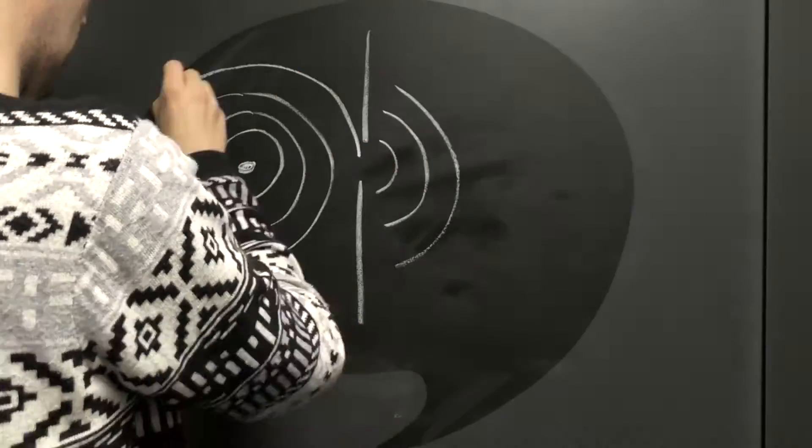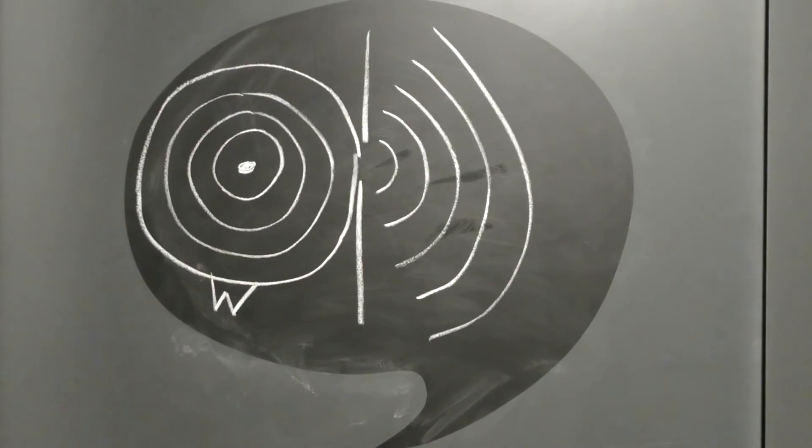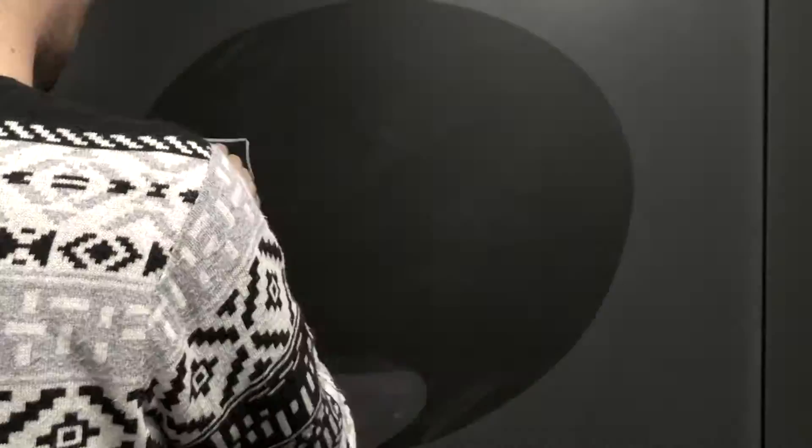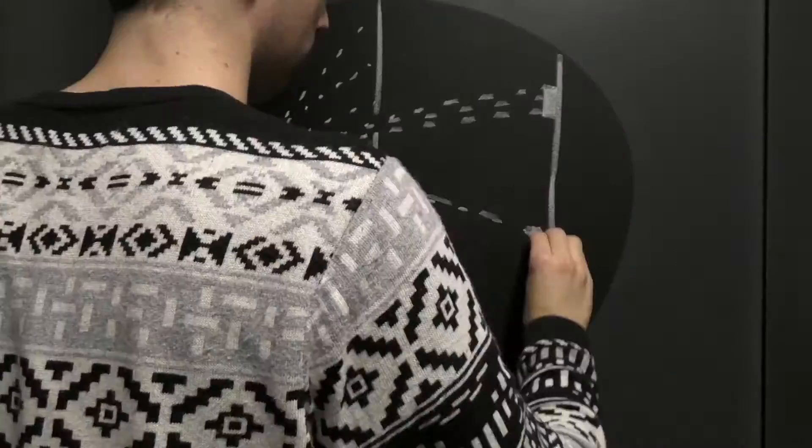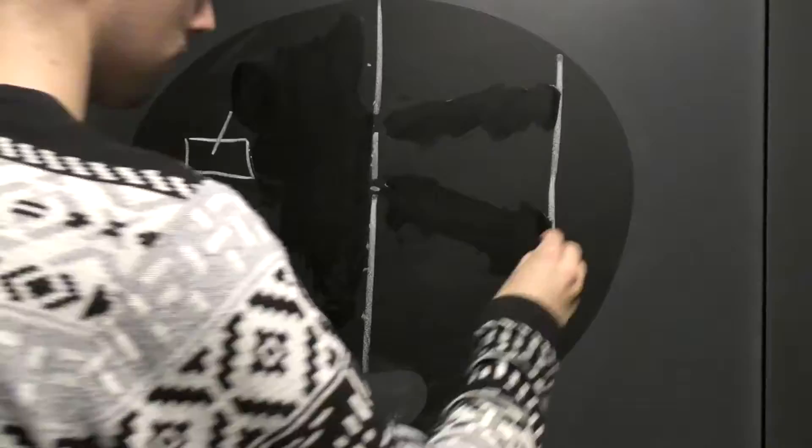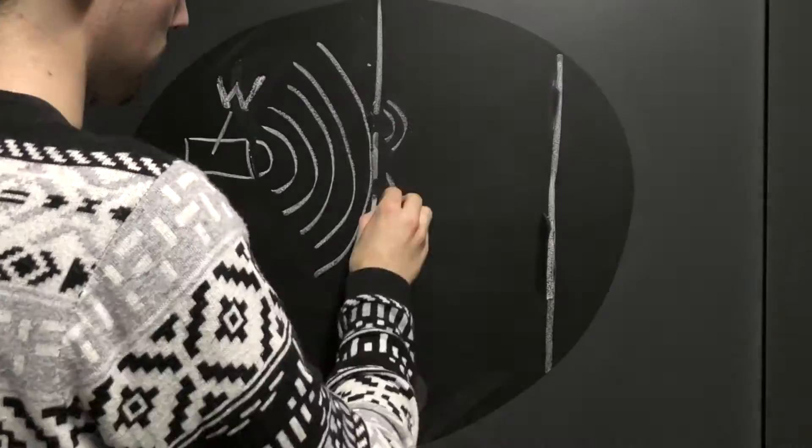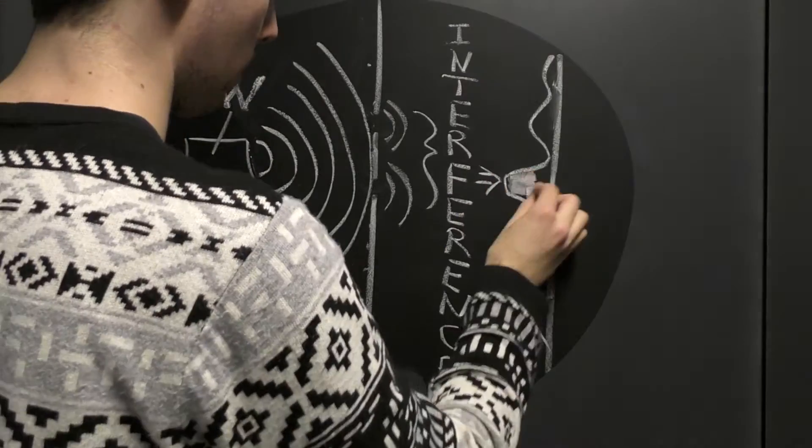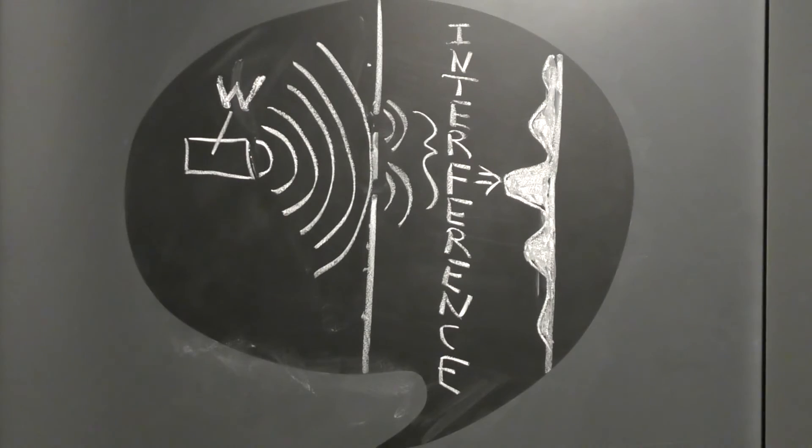Something can be determined to be a wave or a particle with the double-slit experiment. A source of particles fired randomly at two slits will produce two peaks on a screen where the particles have accumulated. Whereas a source of waves will interfere with itself as it passes through the slits, resulting in an interference pattern.